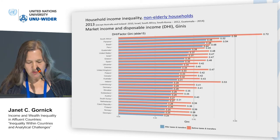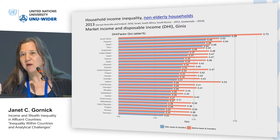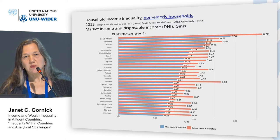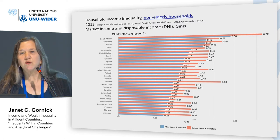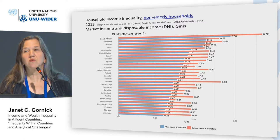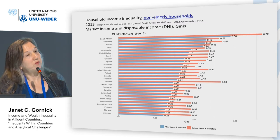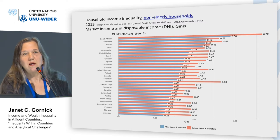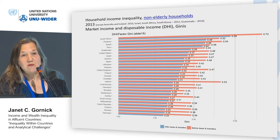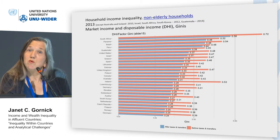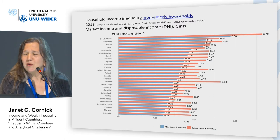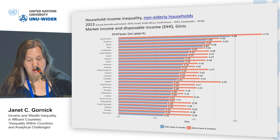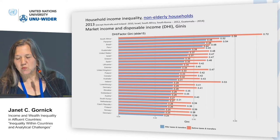What happens when we add middle-income countries to this story? For many years, LIS was almost entirely in the world of high-income countries. About 15 years ago, we made a very concerted effort to add middle-income countries, which caused us to pause for almost two years and redesign our data template. We had to take much more account of informal labor, transnational remittances, and consumption from home production. We then added something like 20 to 25 middle-income countries, which is why we're now up to about 50 countries.